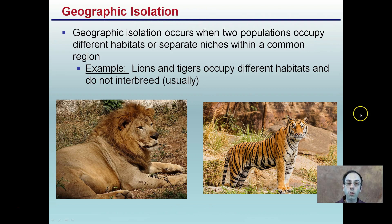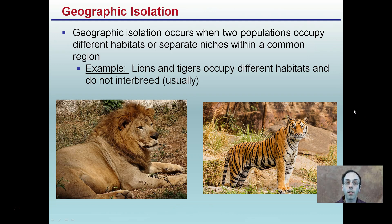Geographic isolation occurs when two populations occupy different habitats or separate niches within a common region. The example would be lions and tigers, which occupy different habitats and do not interbreed — at least usually. They're in different geographical areas, therefore they're not breeding together.